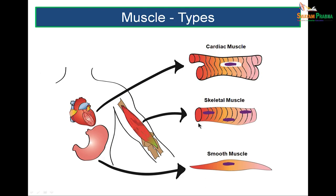We can classify muscles into different types. As seen in this figure, skeletal muscle forms muscles of the skeleton of the body. There is cardiac muscle found in the heart, and smooth muscle found in the gastrointestinal tract.